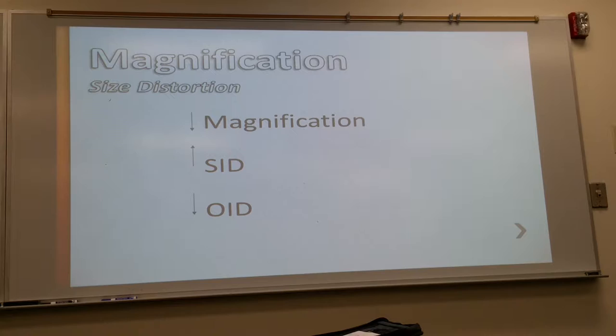And what can you do? You've got that increased OID because of the body part. So what can you do? Increase SID. Increase the SID to compensate for that. And guess what distance we use for our lateral C-spines? Seventy-two. And it's for that reason.